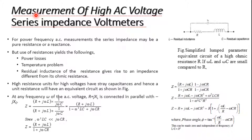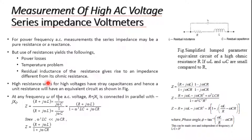Sphere gaps are used when only the peak value of voltage is needed and for calibration purposes. For power frequency AC measurement, the series impedance voltmeter is the first method. The series impedance may be pure resistance or reactance, but using pure resistance yields limitations: power losses, temperature problems, and residual inductance of the resistance giving rise to an impedance different from its resistance alone.